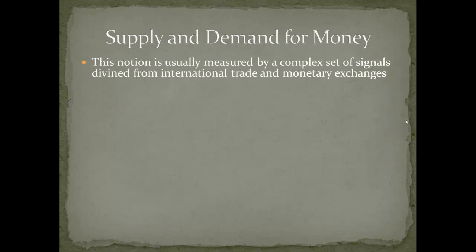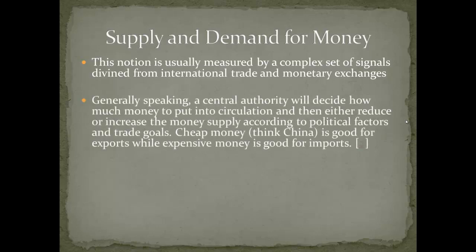The supply and demand of a currency are usually measured by a really complex series of signals from international trade and monetary exchanges, well beyond the scope of our course. Generally speaking, for any currency that is fiat-based, there's usually a central authority that will decide how much money to put into circulation based upon certain benchmarks - what they want their interest rates and employment levels in society to be. They're either going to increase the money supply or contract the money supply to achieve these political factors.